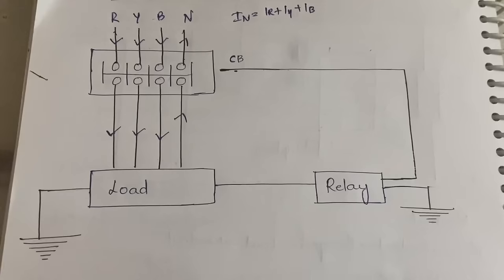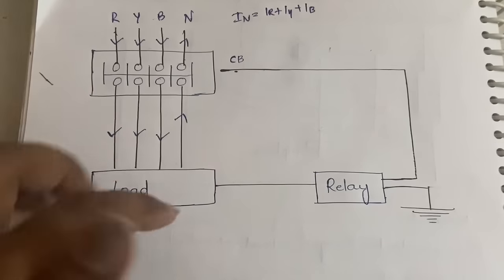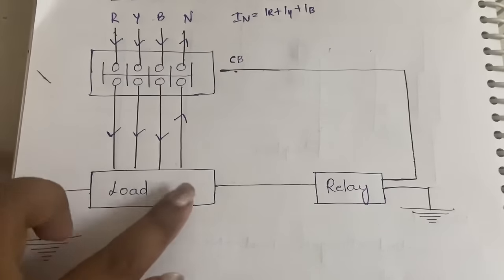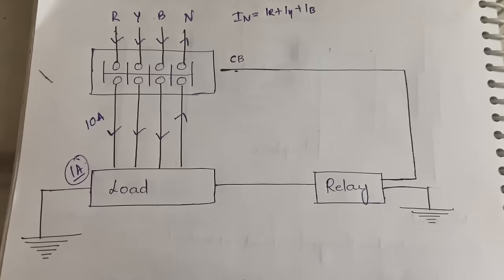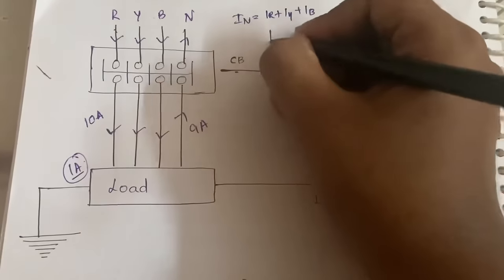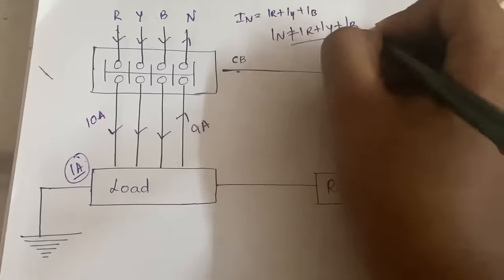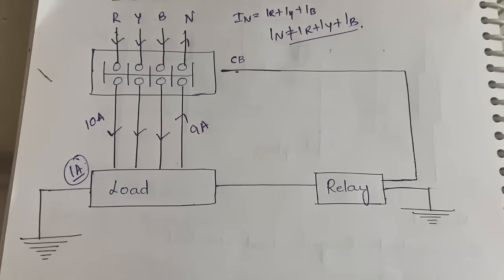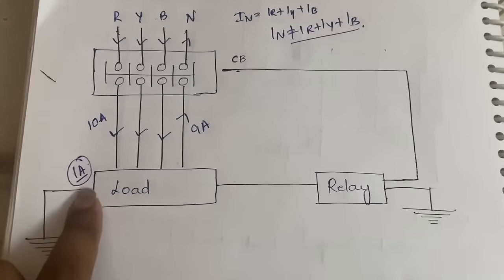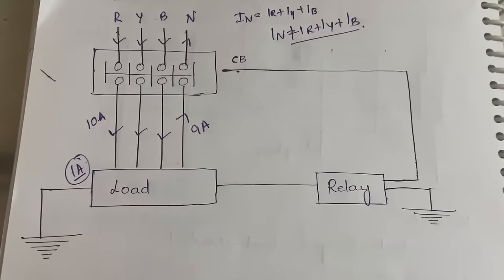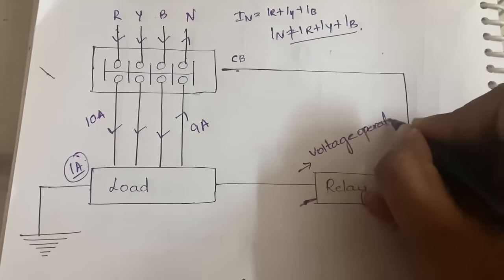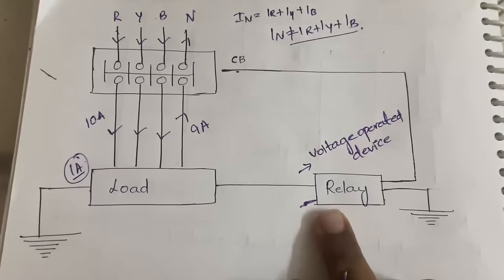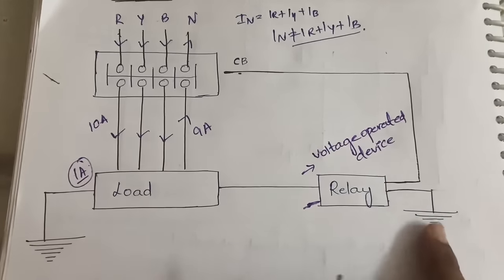But suppose current is being leaked — in that case, if we are sending 10 amperes through R, Y, B and 1 ampere is leaked, only 9 amperes is sent through neutral. So IN is not equal to IR + IY + IB. This 1 ampere of leaked current will go to the ground through the relay. The relay is a voltage operated device.